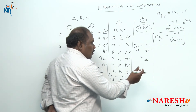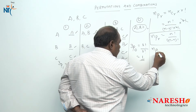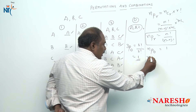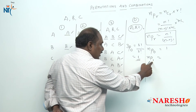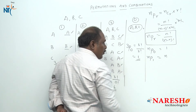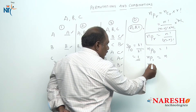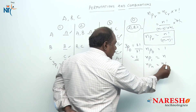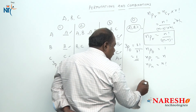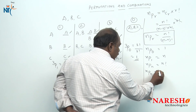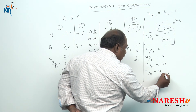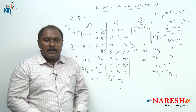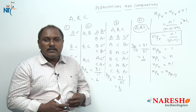Some important values to know: nP0 equals 1, meaning you do not arrange anything. nP1, selecting one thing out of n different things and arranging, is given by n factorial. In permutations, nPn is also equal to nP(n minus 1). These are the basic points we must know to answer questions in permutations, and we will learn some more new points.